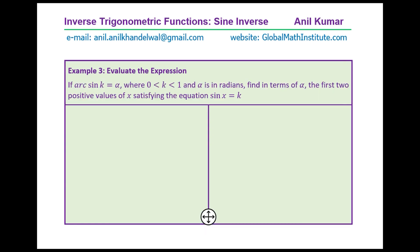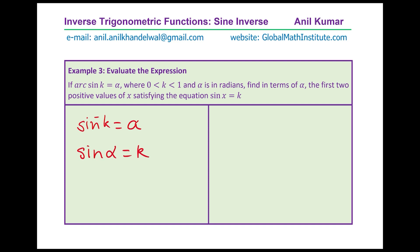Question 3: if arc sin k equals alpha, where k is between 0 and 1 and alpha is in radians, find in terms of alpha the first two positive values of x satisfying sine x equals k. Note: arc sin and sine inverse are the same thing. So if sine inverse k equals alpha, that basically means sine of alpha equals k.